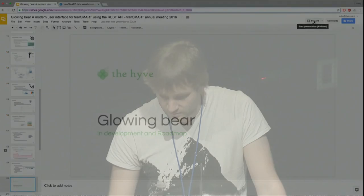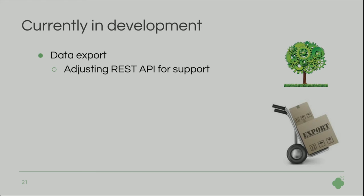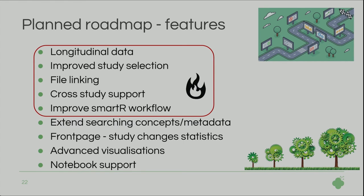Looking at what's currently in development and the roadmap: we're actively working on data export, for which we're adjusting the REST API to support it — this feature is still being developed fully under the Translocation budget, so it's fully funded. The planned roadmap, based on feedback from the Transmart community, includes hot features: longitudinal data support, improved study selection, file linking, cross-study support, and improved SmartR workflow.